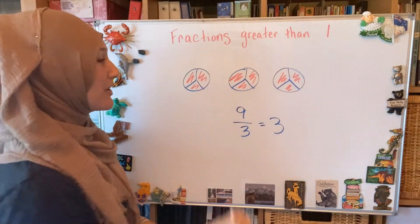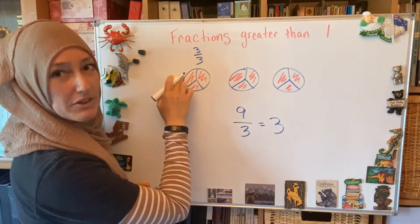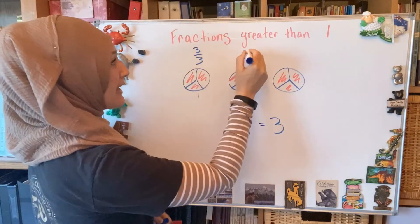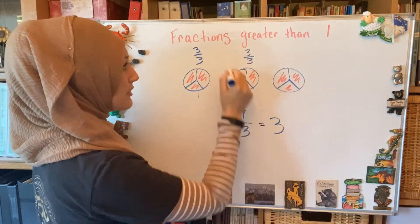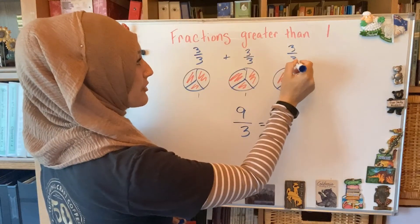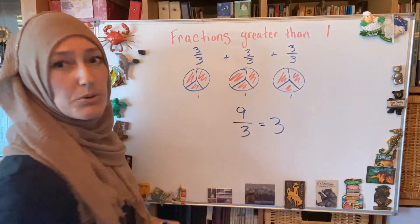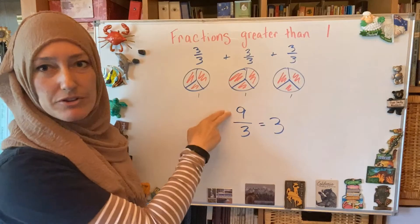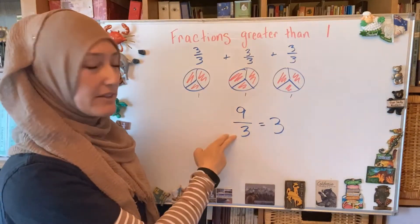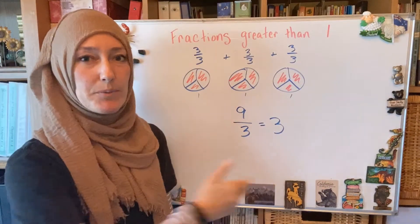You can think of it also as this. This is one whole. It's three-thirds. That's one whole. And another three-thirds. That's another whole. And another three-thirds. That's the third whole. And so when you have a fraction with a larger numerator than the denominator, you know that it's more than one.